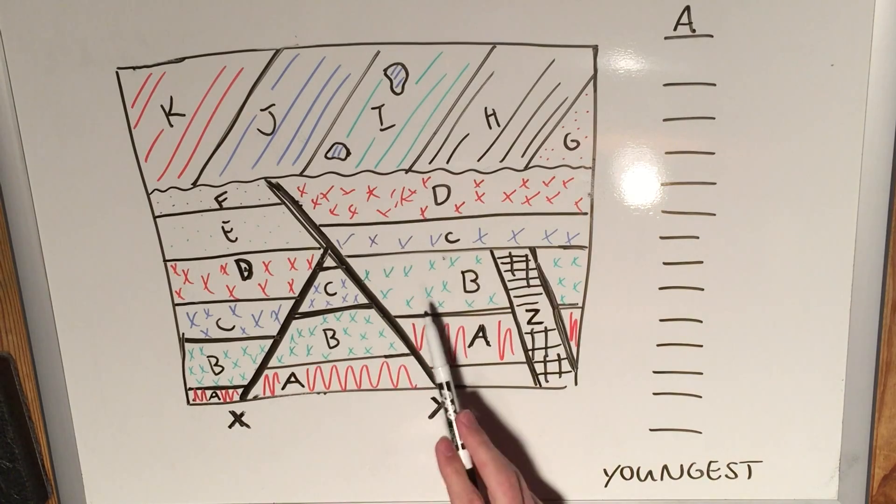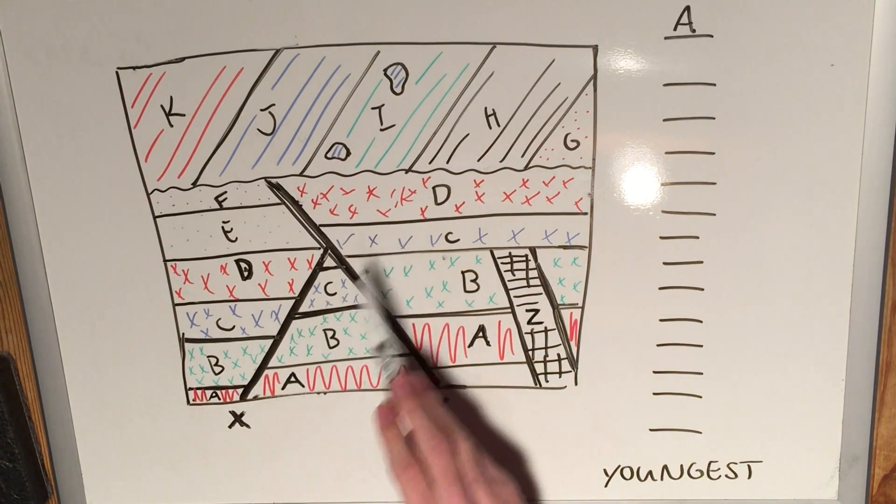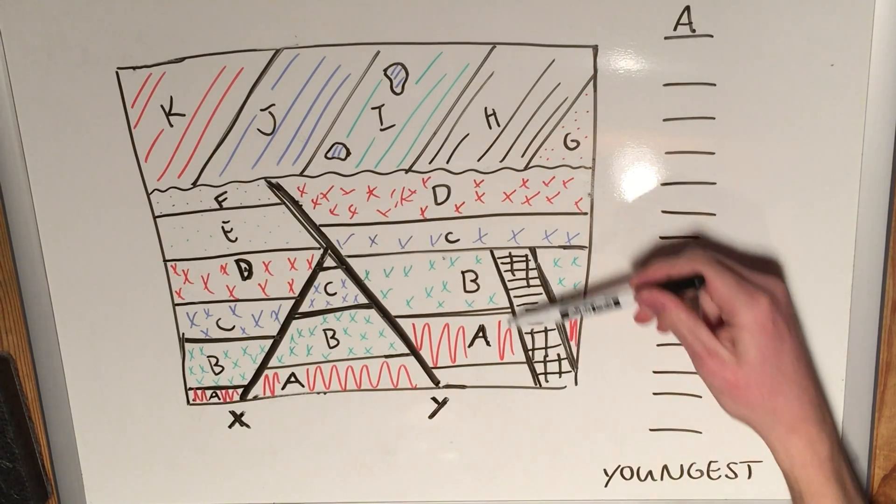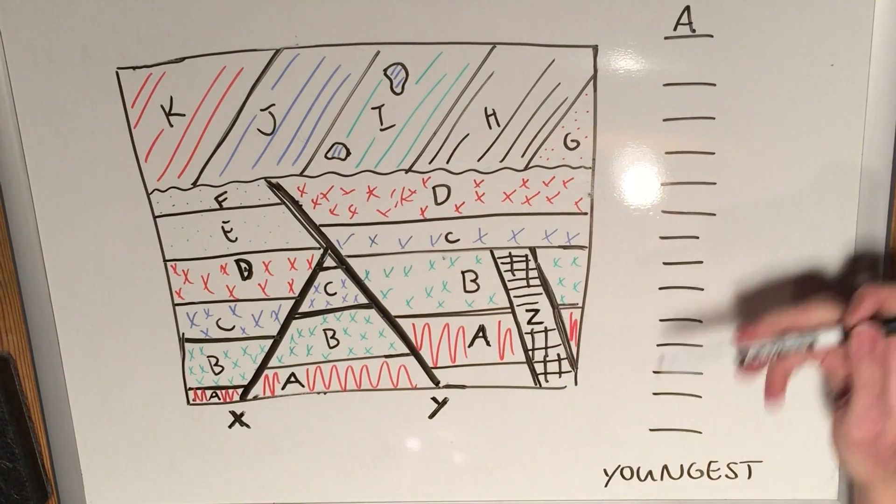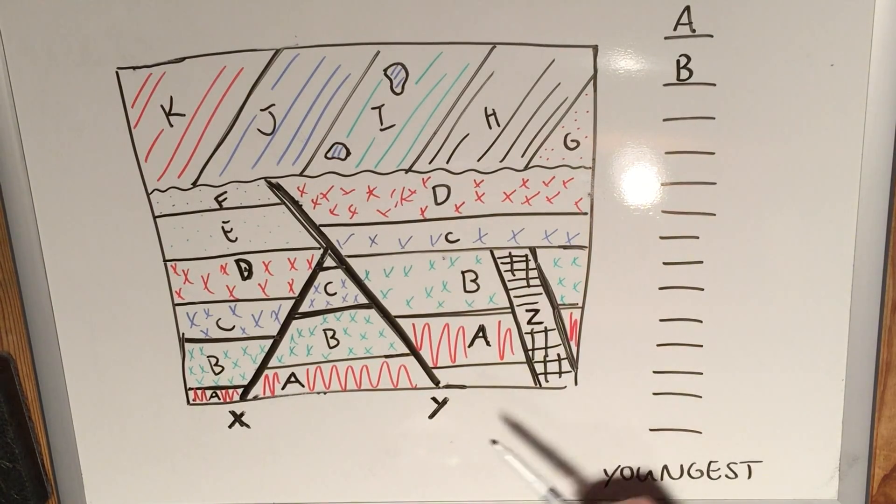Then we can continue our way up and look at B. B is directly above A, so it's younger. It's directly below C in all cases, even when the fault breaks it up, so it's got to be younger than C. And once again, Z does cut through B, therefore B comes next.